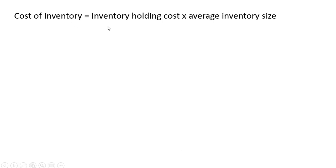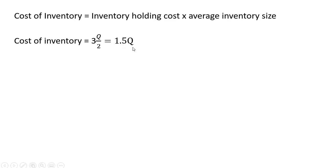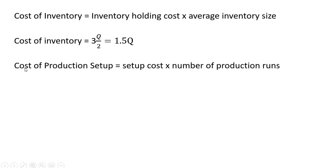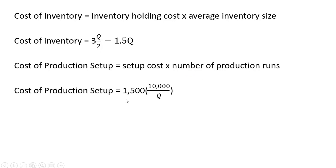The cost of inventory equals the inventory holding cost times the average inventory size — that's $3 times Q divided by 2, which simplifies to 1.5Q. The cost of the production setup is the setup cost times the number of production runs. Since each production run requires a separate setup, this equals $1,500 multiplied by 10,000 divided by Q.